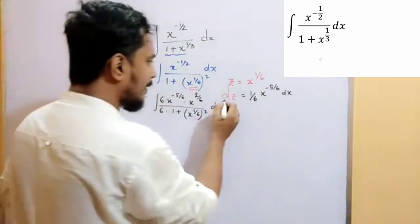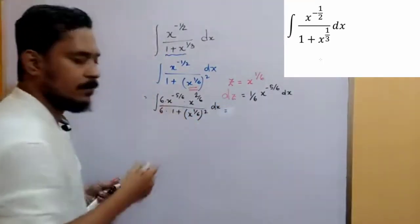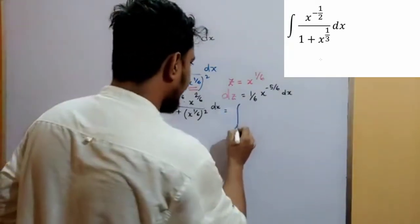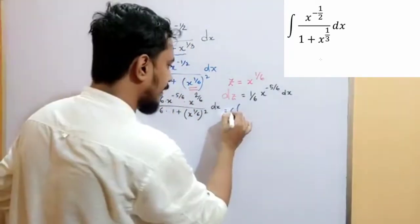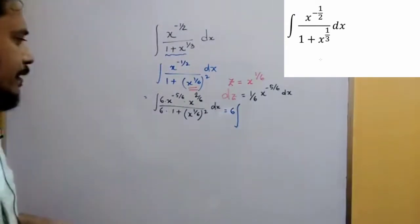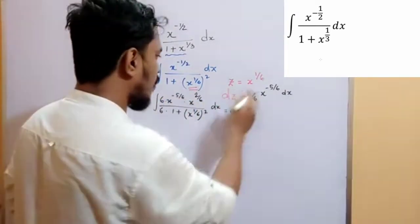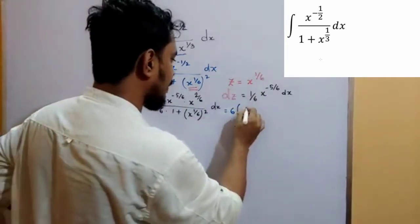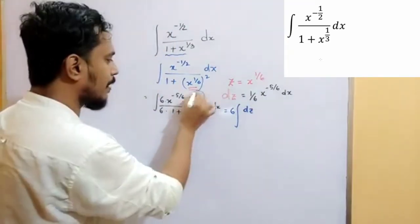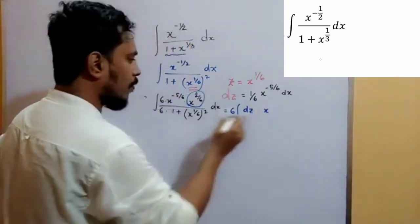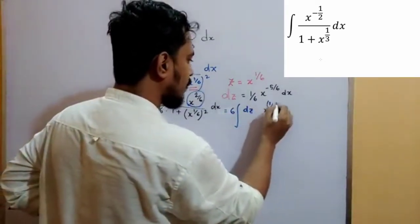We can find the dz part from that equation. So, we write down x to the power minus 5 by 6 dx and 1 by 6, that part is write down as dz. And we can write down x to the power 1 by 6, that is whole square.